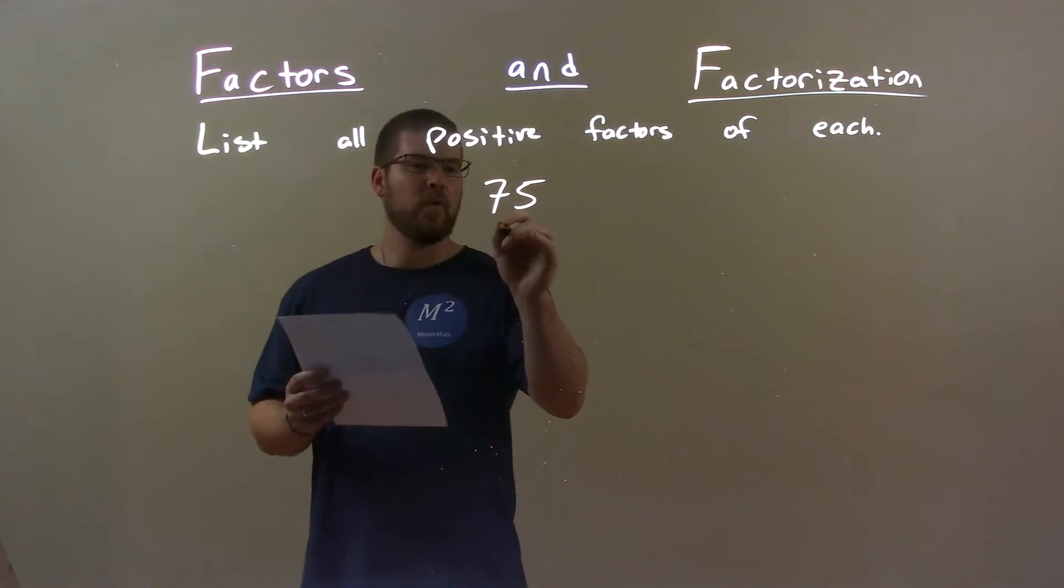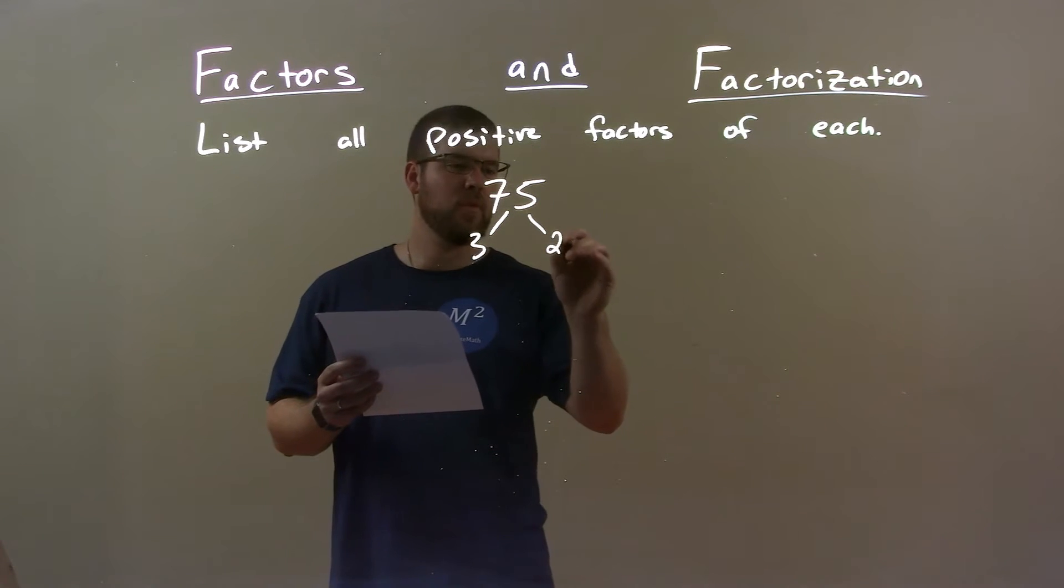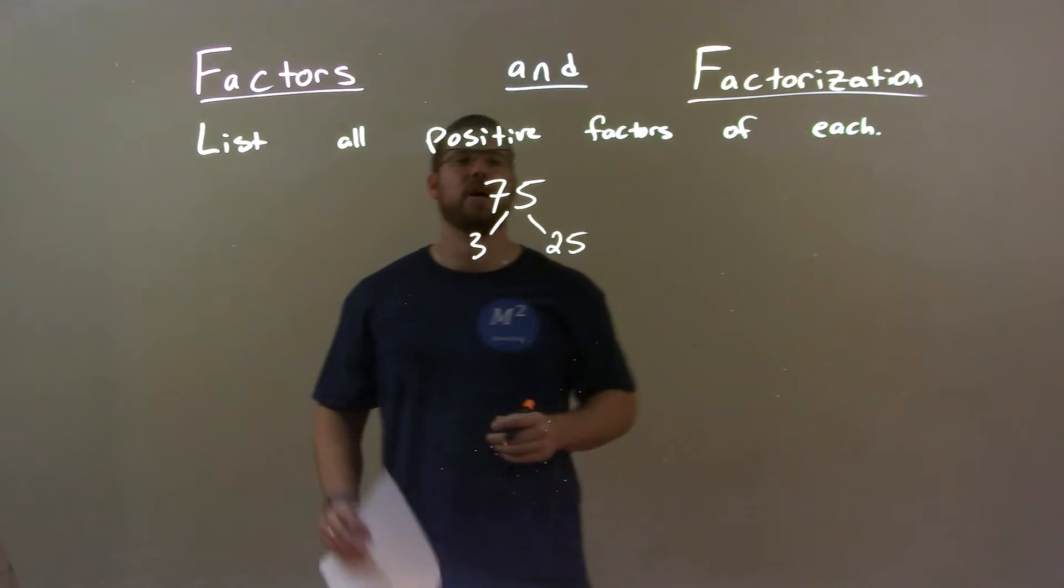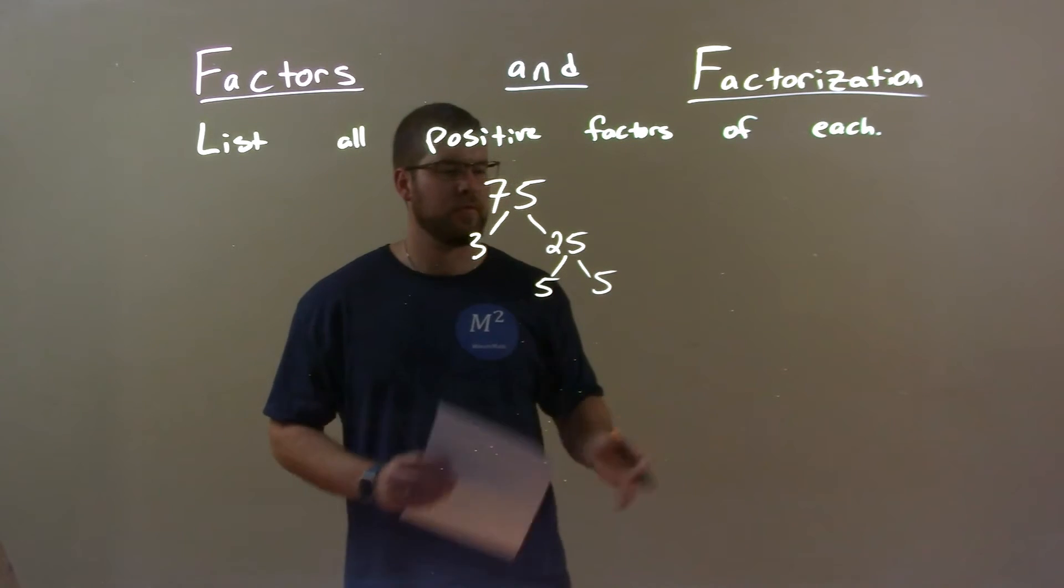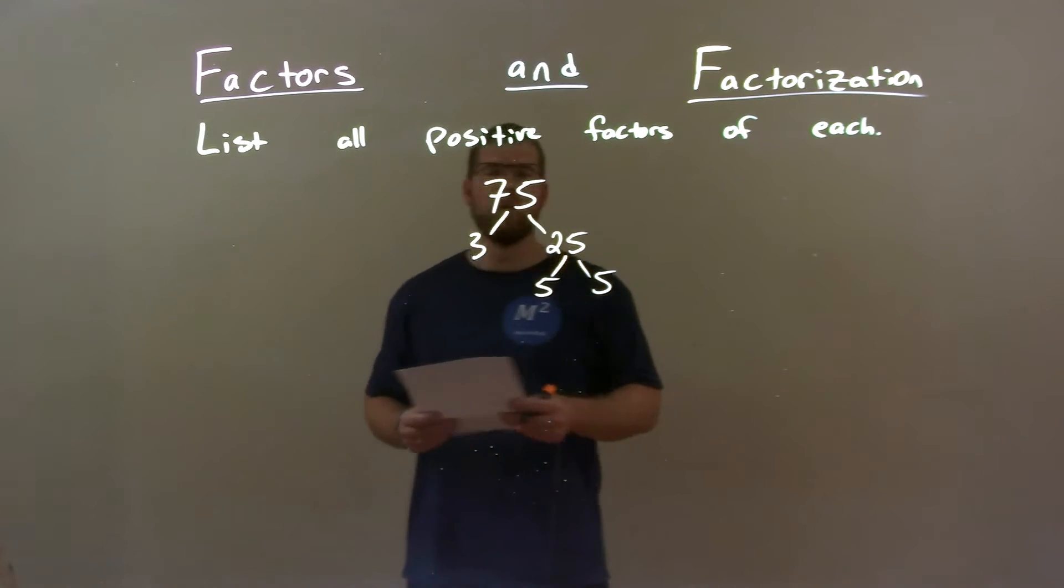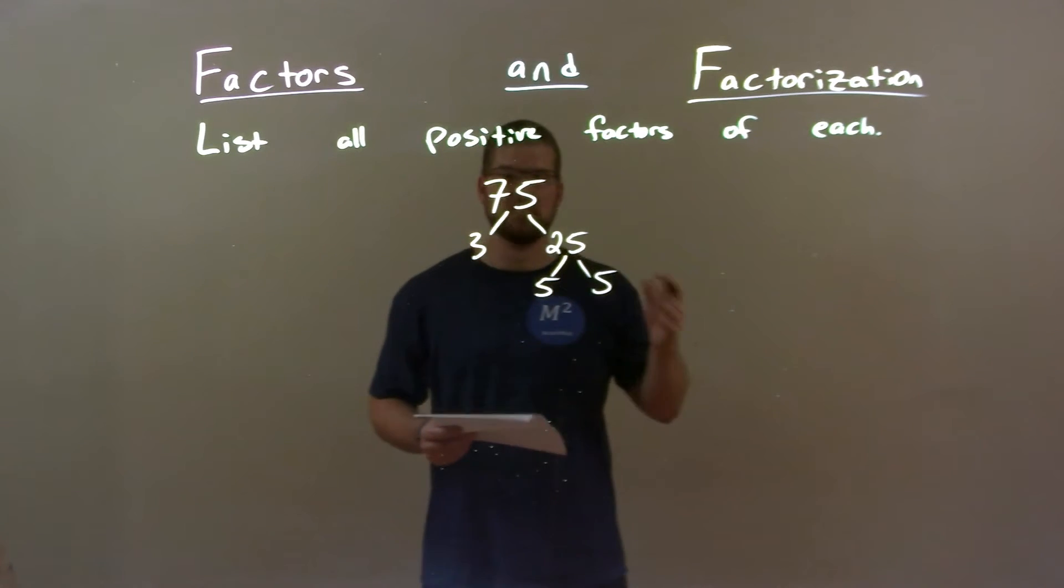Well, we know 3 goes into 75 25 times. 3 times 25 is 75 and 25 is just 5 times 5. So now we have our prime numbers that get us to 75.